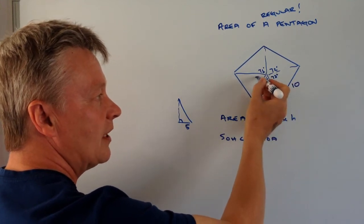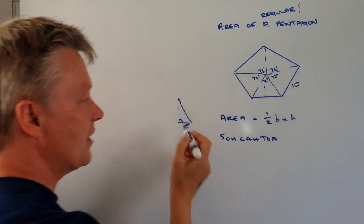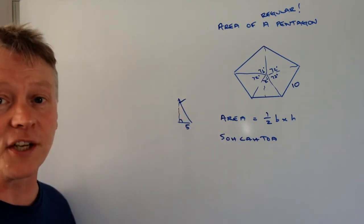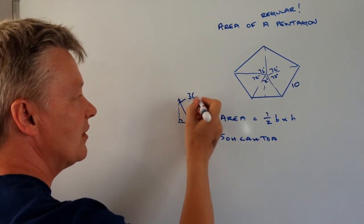So therefore, if we've got this right angle triangle that we've created here, it means this bit is going to be half of that, which is 36 degrees.